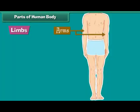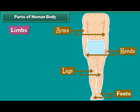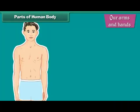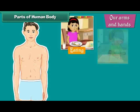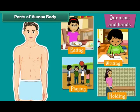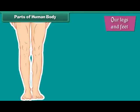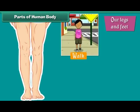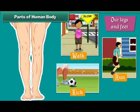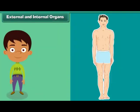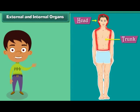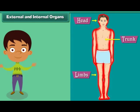Limbs consist of a pair of arms, hands, legs, and feet. Our arms and hands assist us in eating, writing, playing, holding, and lifting things. Our legs and feet help us to walk, run, kick, and dance. Each of the three main parts of the human body bears many organs, which may be classified as external organs and internal organs.